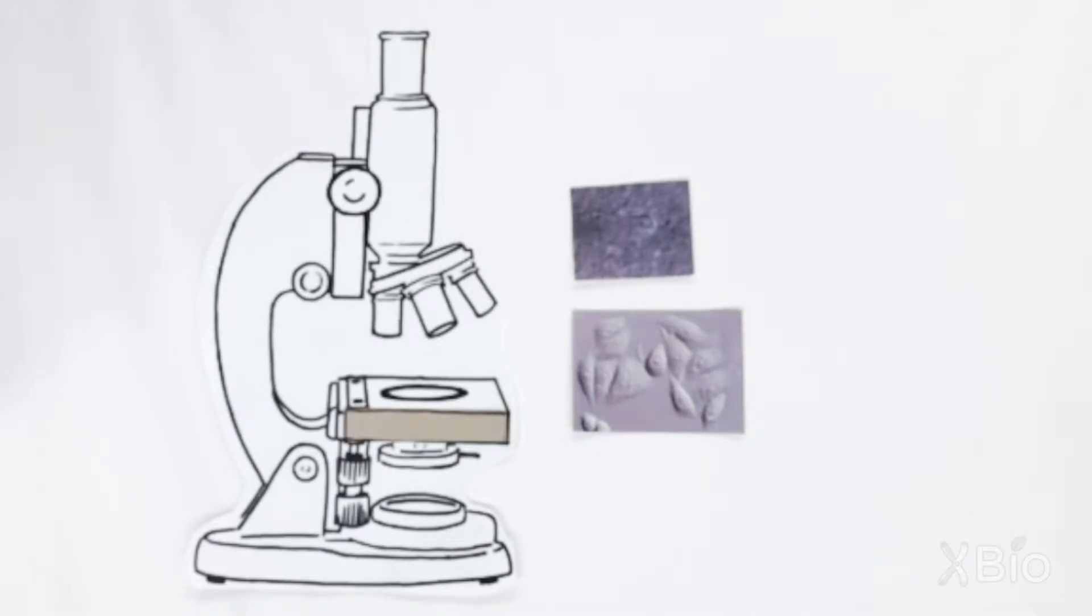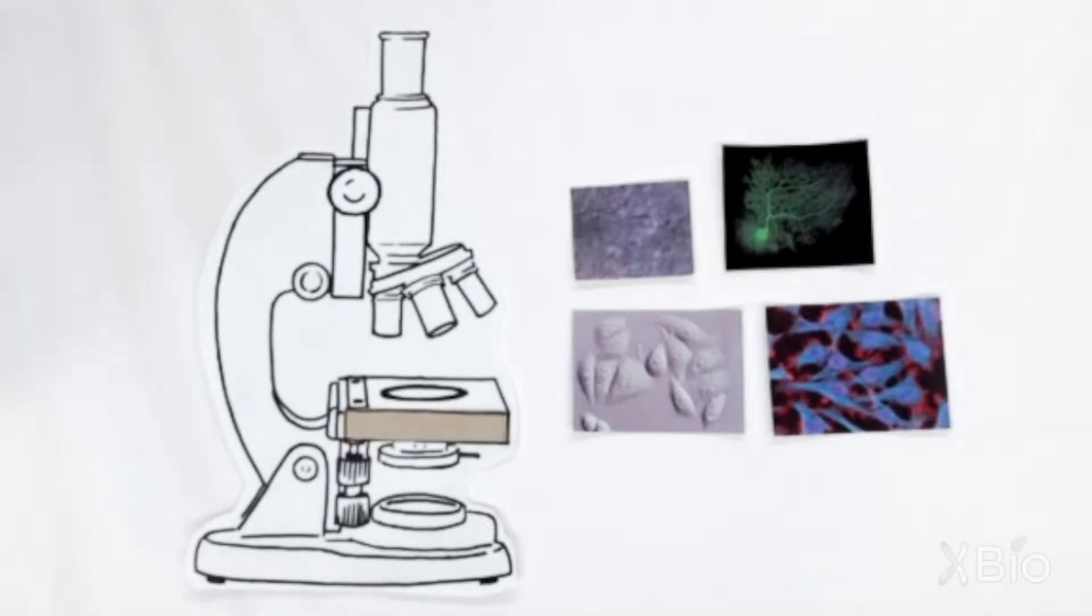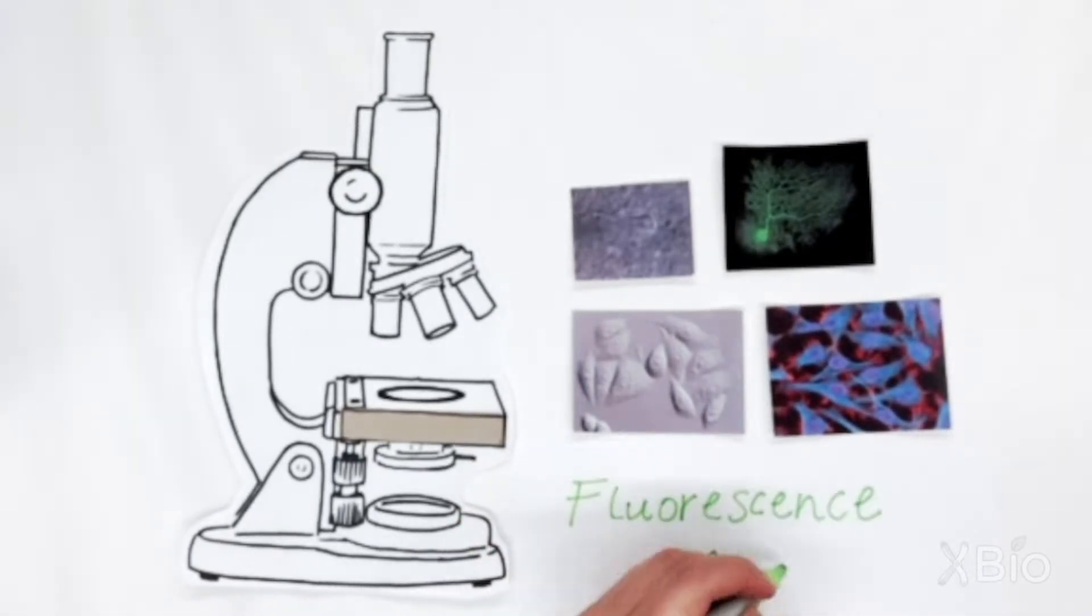This is partly because when you look at something under a microscope, a lot of things are pretty much the same color. This is where fluorescence microscopy comes in.